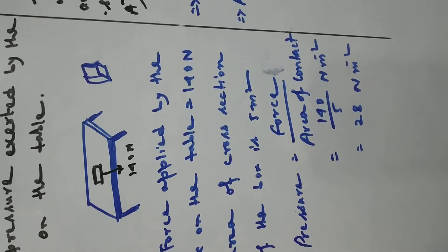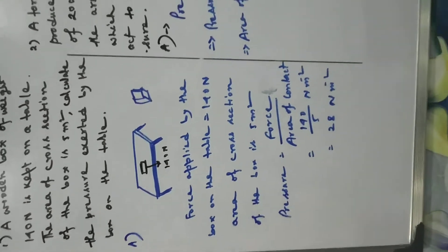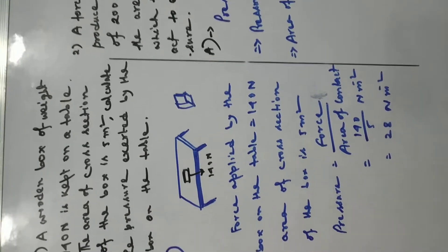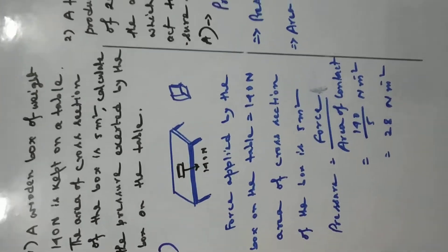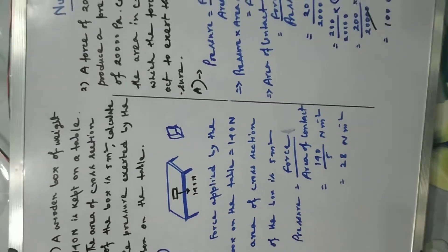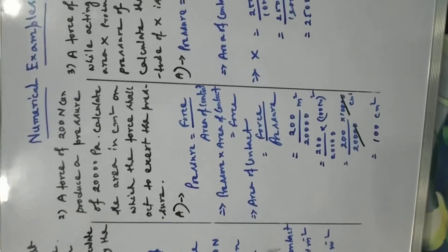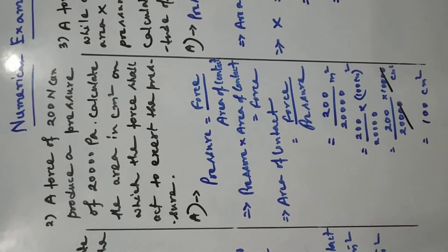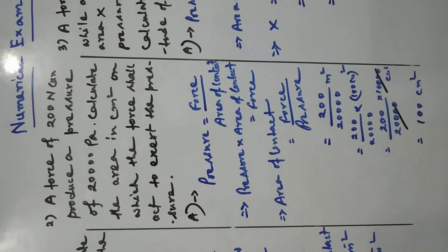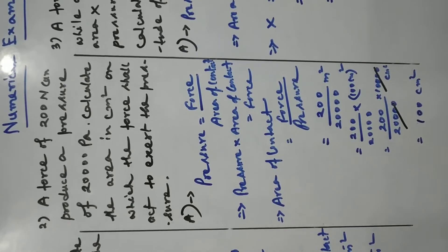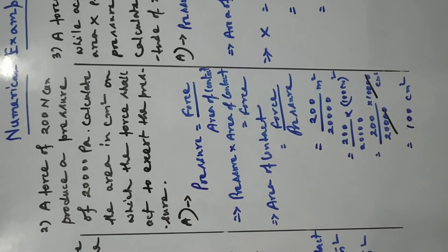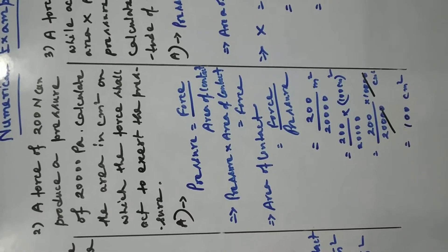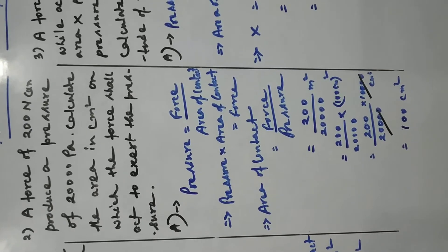The required pressure is 140 by 5, that is 28 Newton per meter square, or 28 Pascal. Now in the second example: a force of 200 Newton can produce a pressure of 20,000 Pascal. Calculate the area in centimeter square on which the force shall act to exert the pressure.